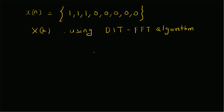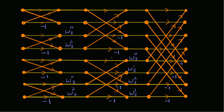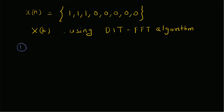The input x[n] is given by the values 1, 1, 1 for the first three samples and zeros for the next five values. Given this signal, we have to apply the DIT-FFT algorithm, so let us evaluate the result stage by stage.